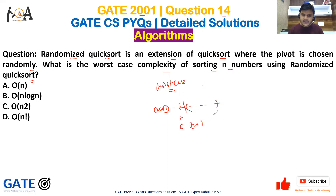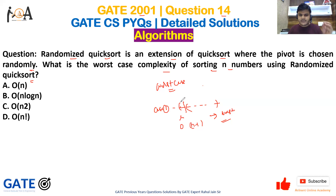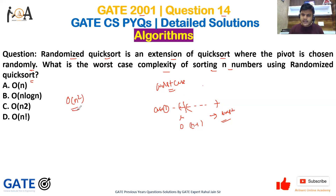Similarly, case two: if the elements are already sorted and we apply quicksort, and every time we choose the pivot element from the corner, that will also lead to the worst case. In both cases, the time complexity becomes O(n²).